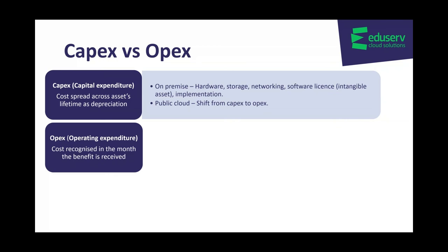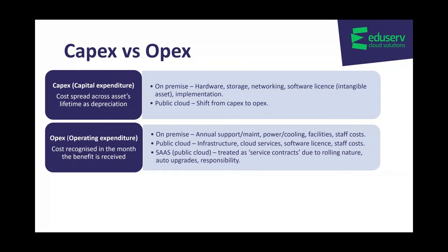On-premise OPEX includes annual support and maintenance, power and cooling of your data center, facilities costs and staff costs. Within public cloud, OPEX would be the infrastructure, cloud services and software licenses — because all of these are on a consumption basis, you pay monthly for what you use — and staff costs. Software as a service within public cloud is also treated as OPEX because it's treated as a service contract due to its rolling nature, auto upgrades and the responsibility involved.